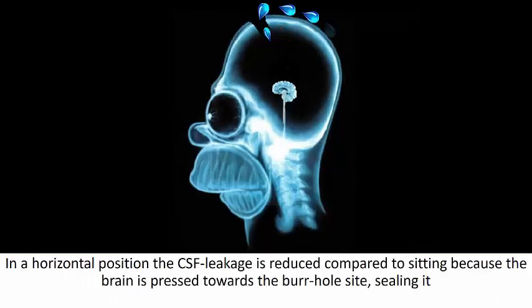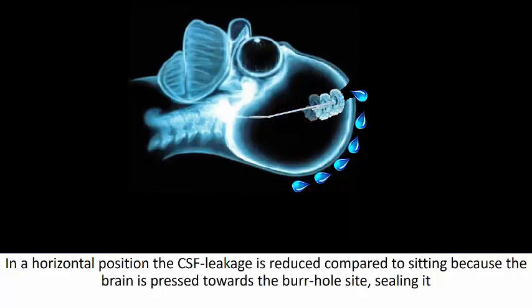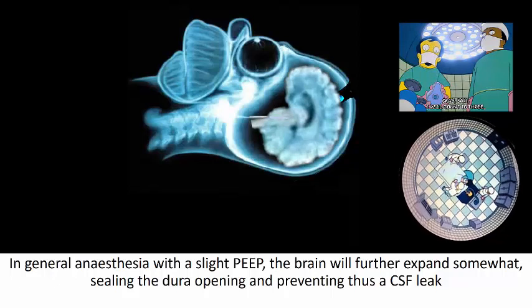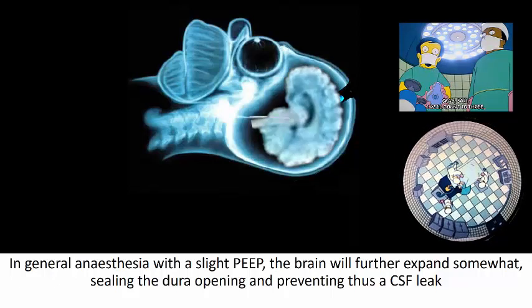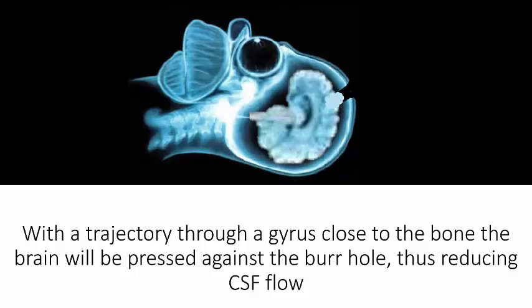The reason why I used to implant the electrodes in a semi-sitting position was that I wanted to avoid CSF leakage. Paradoxically, when I started to implant the patients in a horizontal position, the CSF leakage was much reduced, since the brain is pressed towards the burr hole site, thus effectively sealing it. And in general anesthesia, with a slight positive pressure, the brain will further expand somewhat, contributing to this effect. And of course, for this to happen, it's important that we choose a trajectory through a gyrus close to the bone, so the brain will be pressed against the burr hole.